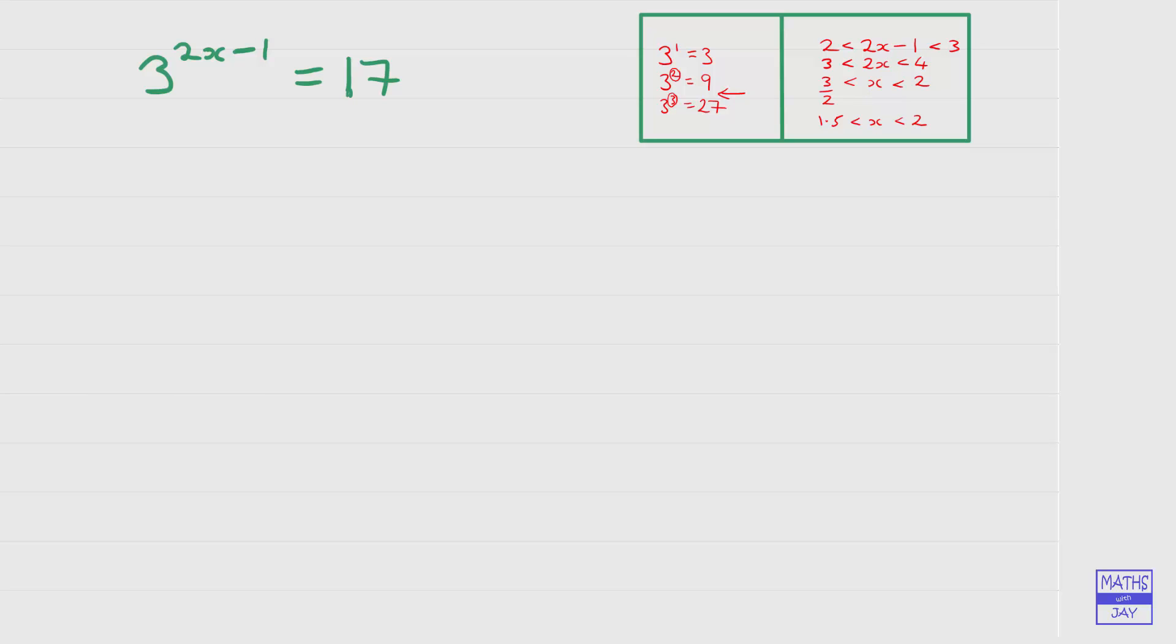The first method is one that you can use if your calculator allows you to choose what base you're working in. And the second method is one which you would use when your calculator will only work in logs to base 10 or natural logs. So we'll start off by using the method which is simplest to use, and this is where you're thinking about logs as being indices.